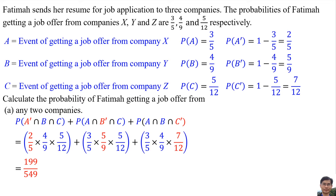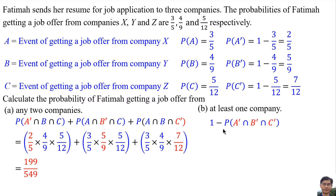Calculate the probability of Ultima getting a job offer from at least one company. The contrary of this is that she does not get any job offer from all three companies. So we use 1 minus the probability of getting no offers: 1 minus A′ times B′ times C′, which is 1 minus (2 over 5) times (5 over 9) times (7 over 12).